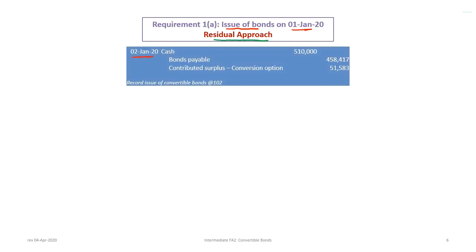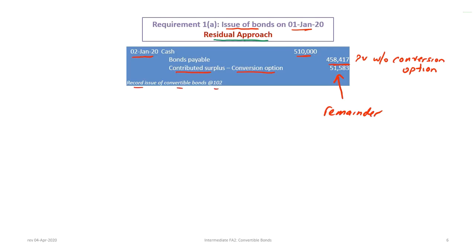We can now record the issue of the bonds on January 2nd, 2020 using the residual approach. The journal entry is: debit cash for $510,000 — that's the amount of cash received. The bond payable is the present value without the conversion option, which you can find in the first amortization table. The remainder is attributed to contributed surplus for the conversion option. So: debit cash, credit bond payable, and credit contributed surplus — conversion option — for $51,583. That records the issue of the convertible bonds at $102.